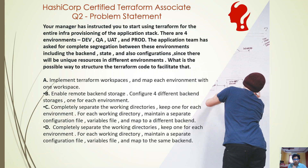Option D is the same except that each working directory maps to the same backend — meaning the S3 bucket, for example, is shared. That is not what we want, since we require complete segregation even at the backend level. Therefore, the correct answer is C.